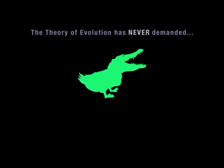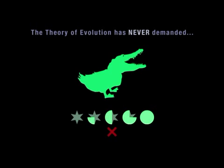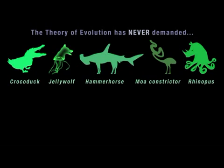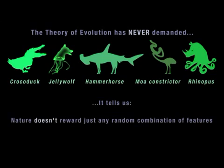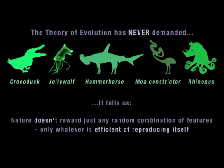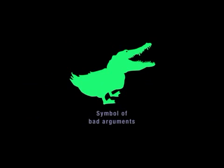The theory of evolution has never demanded the existence of animals with a crocodile's head and a duck's body. Even when there's evidence that one animal evolved directly from another, that doesn't mean the transitional forms must look like whole chunks of each animal stuck together. Evolution doesn't work by combining different species at random, and evolutionary scientists have never hunted for the Crocoduck, the Jelly Wolf or the Rhino Puss. Nature doesn't reward just any random combination of features, and the Crocoduck, invented to ridicule evolution, has instead become the symbol of bad arguments against evolution.